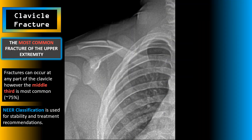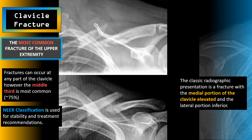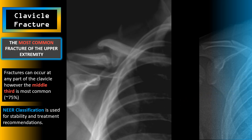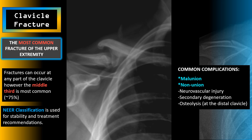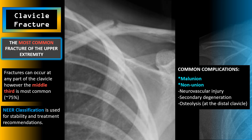Clavicle fractures are the most common fracture of the upper extremity. These fractures can occur at any part of the clavicle; however, the middle third is the most common location. There's a classification system called the Neer classification, which is used for stability and treatment recommendations. The classic radiographic presentation is a fracture with the medial portion of the clavicle elevated and the lateral portion inferior. Complications include malunion or nonunion, neurovascular injury, secondary degeneration, and osteolysis of the distal clavicle.